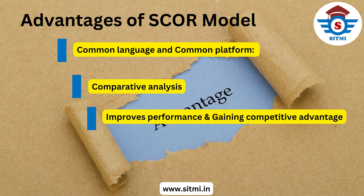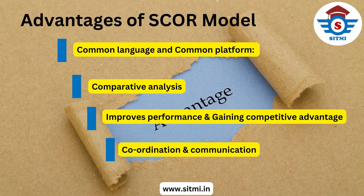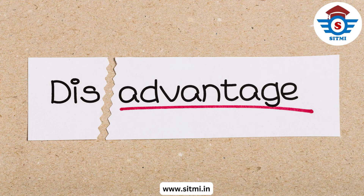By improving supply chain operations, organizations can become more competitive in the market and better meet customer needs. The fourth key advantage is coordination and communication. The SCOR model provides a common framework for communicating and coordinating supply chain decisions and strategies across different parts of the organization and with external partners and stakeholders.